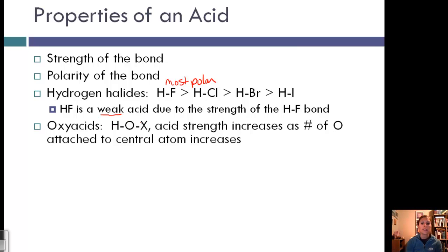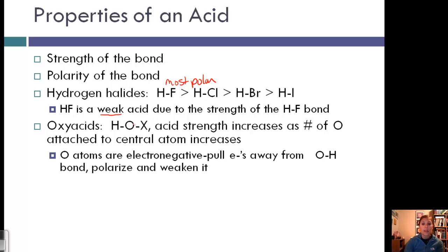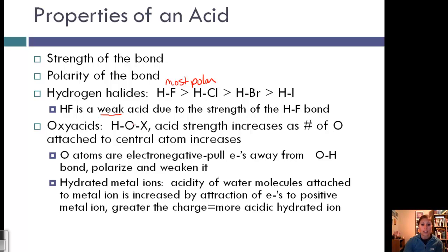Another example are oxyacids. Oxyacids have the general formula H-O-X, where X is some other compound or element. Acid strength increases as the number of oxygens attached to the central atom increases. This is because oxygen atoms are electronegative, so they pull electrons away from the O-H bond, polarizing and weakening it. This makes it easier for the acid to dissociate.